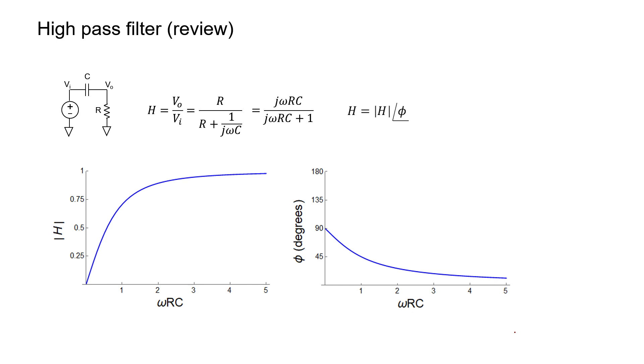But what happens to the phase? At high frequencies, the phase approaches 0 degrees, meaning the phase of a high-frequency signal will not be altered as it passes through the high-pass filter — that's what we expect. But for low-frequency signals, the phase approaches positive 90 degrees. This means that a single capacitor in the series configuration can shift the phase of a signal somewhere between 0 and positive 90 degrees.